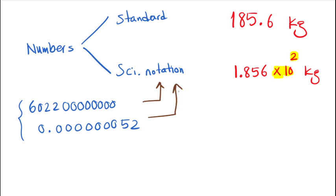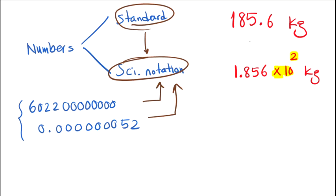So we prefer in our chemistry class to report numbers by scientific notation rather than the standard method. It doesn't matter whether our numbers are too small or too large — we need to learn how to convert a standard number to scientific notation, and I'll review that for you with some examples.